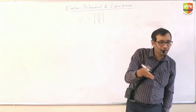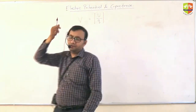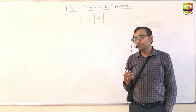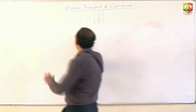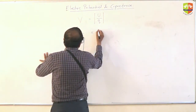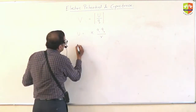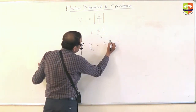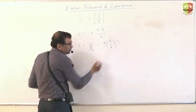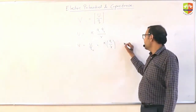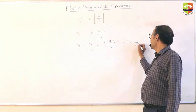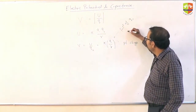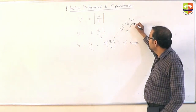Now, potential of a point charge is very simple. You know that potential energy between two charges is KQ1Q2 by R. So the potential of a charge Q1 at a distance R is KQ1 by R. This is for the point charge only — this is the potential of Q1 at a distance R.